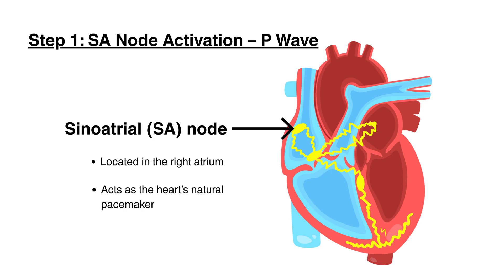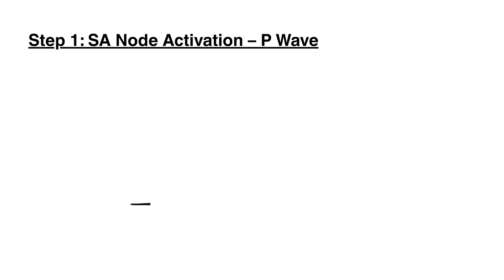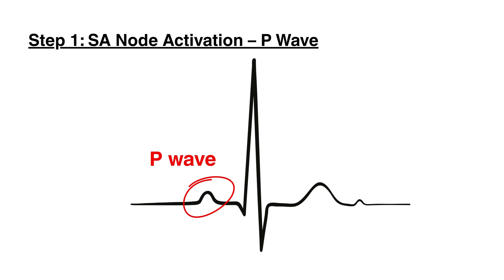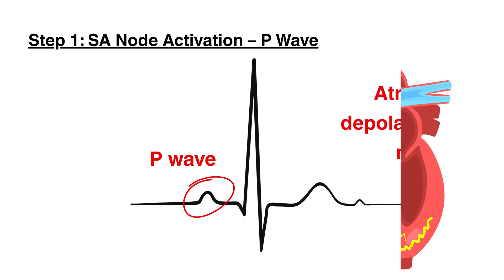This impulse spreads across both atria, causing them to contract. On an ECG, this is seen as the P-Wave, which represents atrial depolarization.